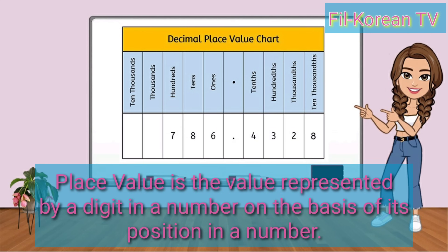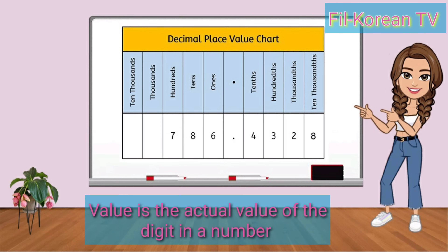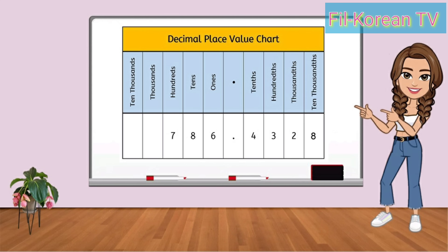When we say place value, it is the value represented by a digit in a number on the basis of its position in a number. While value is the actual value of the digit in a number.